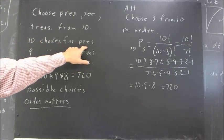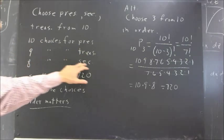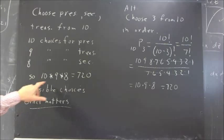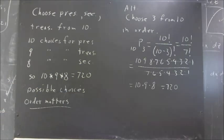there are going to be ten choices for whoever's first, nine for whoever's second, eight for whoever's third. So there are 10 times 9 times 8 or 720 possible choices.